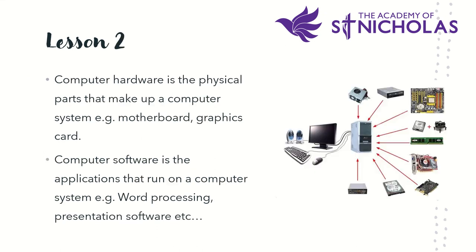Lesson two focused on hardware — the physical parts of a computer system. We looked at things like the motherboard and the CPU. The CPU stands for Central Processing Unit and is defined as the brain of the computer. It sends all the instructions out to the various parts of the computer system, and will fetch and execute the instructions as and when you need them.